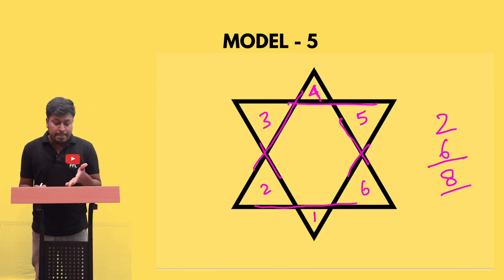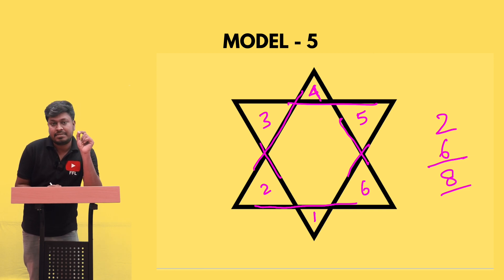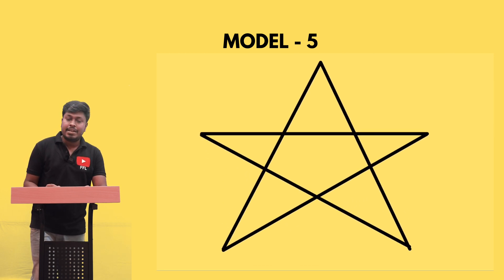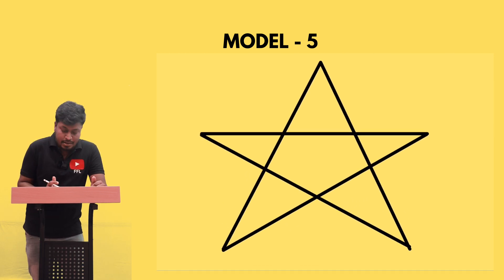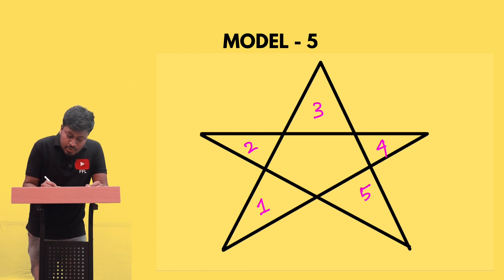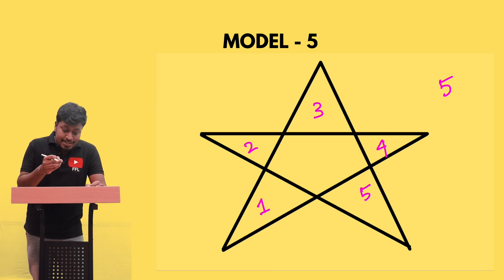So for type number one, which is a star based on two overlapping triangles, there are six small triangles and two large outer triangles, giving a total of eight triangles. For type number two, our target is again to find how many triangles there are. You can see the small triangles: one, two, three, four, and five.